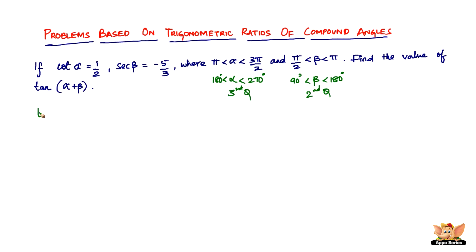If we have to find tan(α+β), we first have to know the formula for tan(α+β), which is tan α plus tan β divided by 1 minus tan α times tan β.